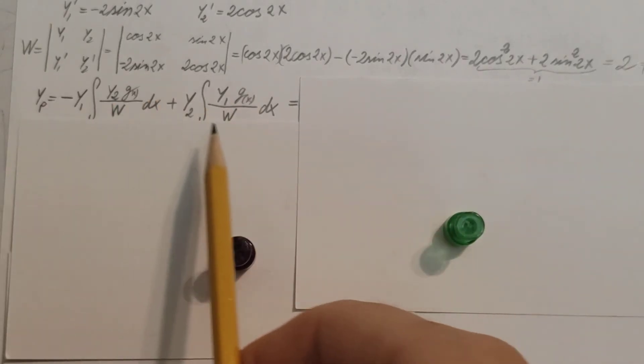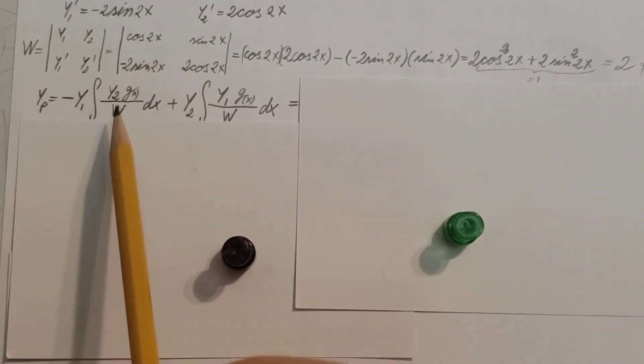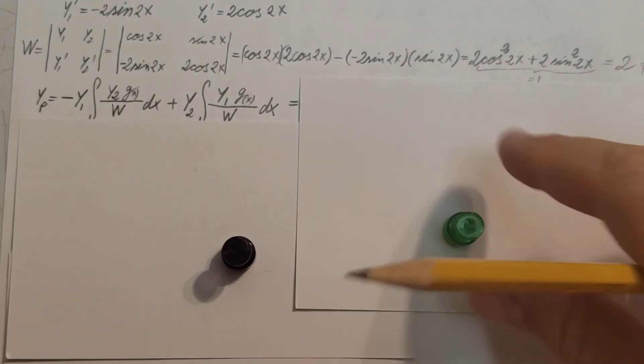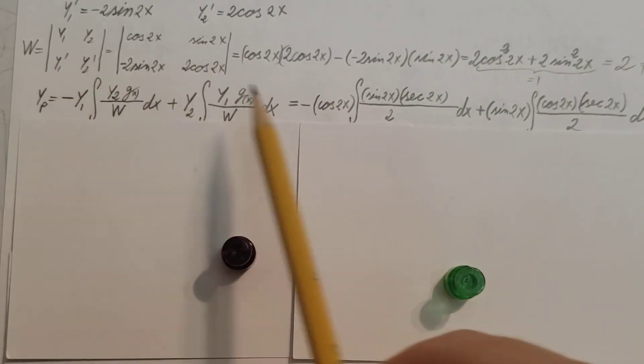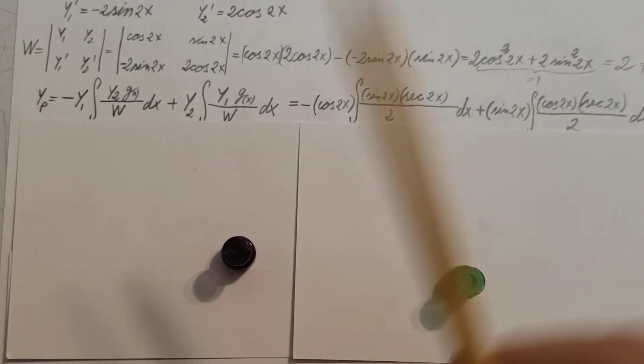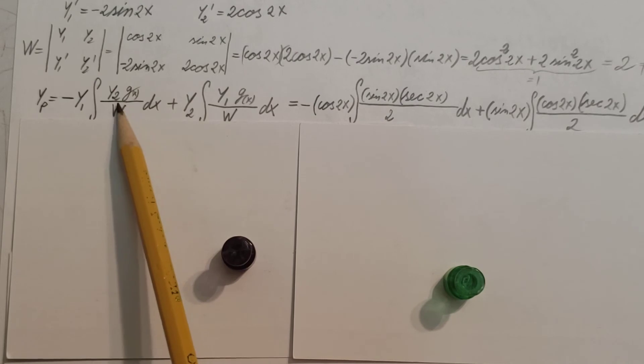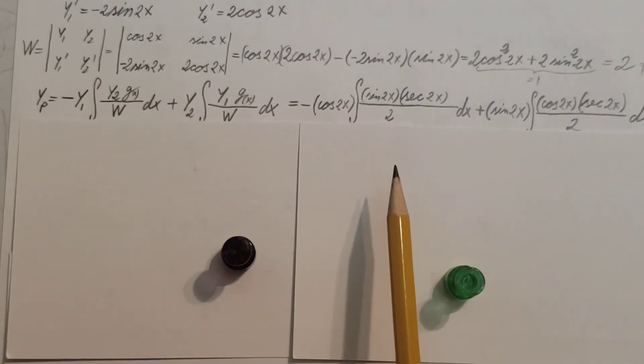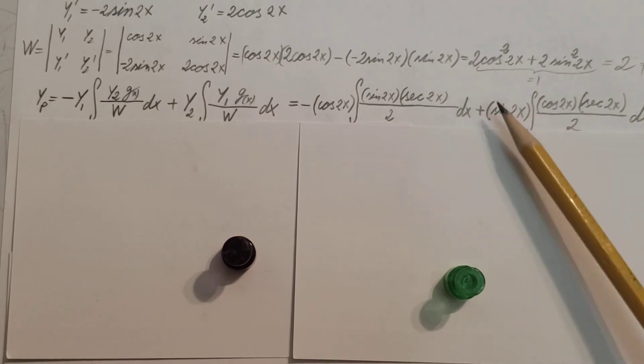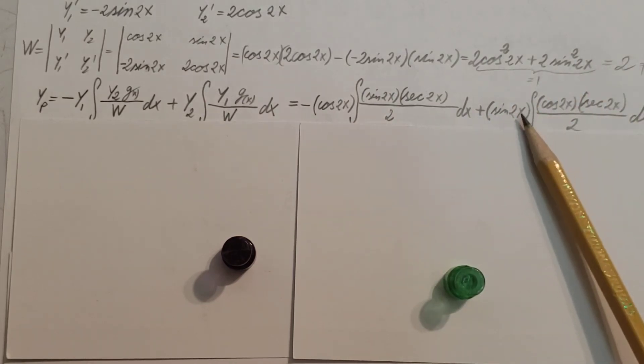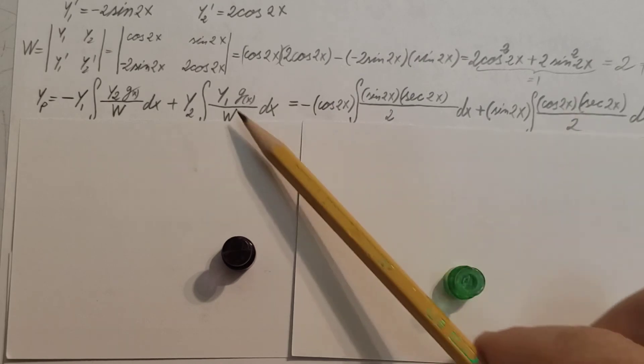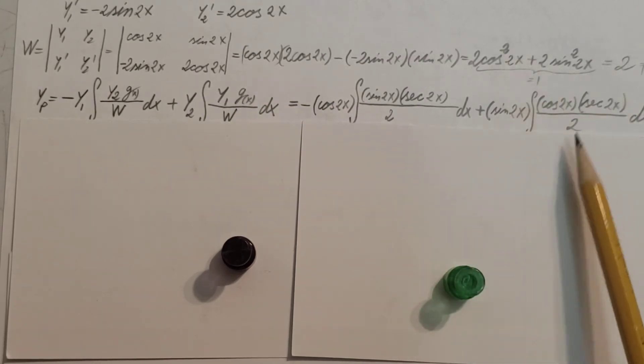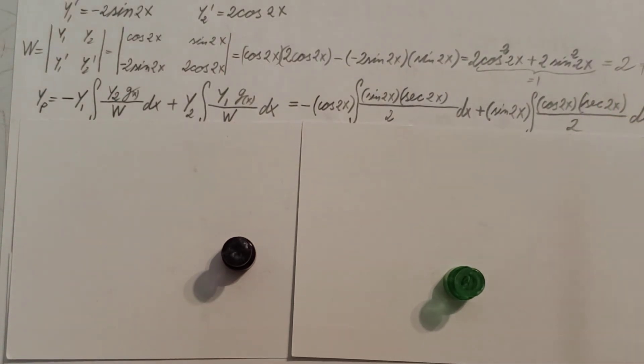Now back to our formula right here of yp. So now let's take all our components and plug them in. That's what we can see right here. For y1, well there's a negative, make sure you don't forget it. We plug in cos(2x), the integral of y2, which is sin(2x), times g(x), which is what's on the right-hand side of our equation, which is sec(2x), divided by the Wronskian, which is 2, dx. Plus we have y2, which is sin(2x), the integral of y1, which is cos(2x), times g(x), which is sec(2x), divided by our Wronskian, which is 2.